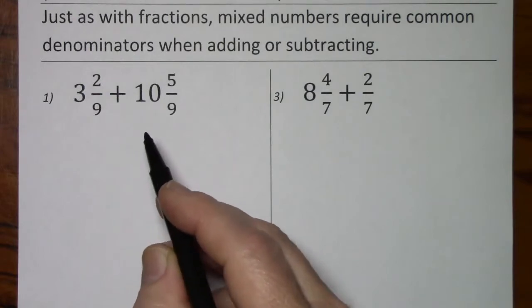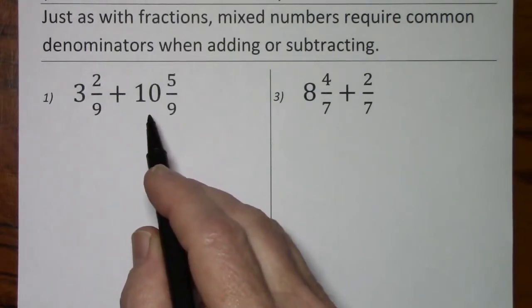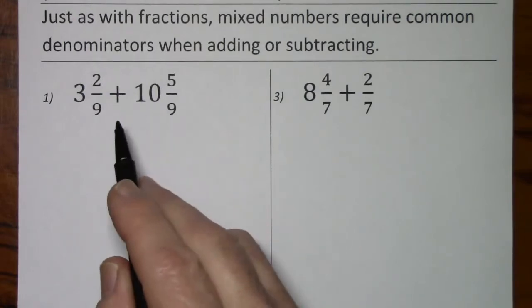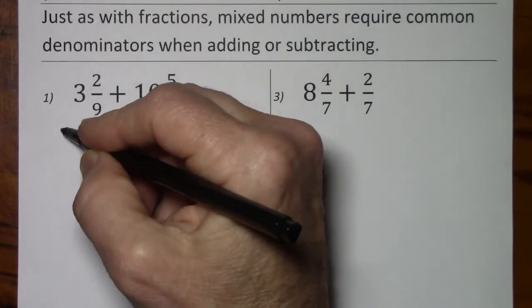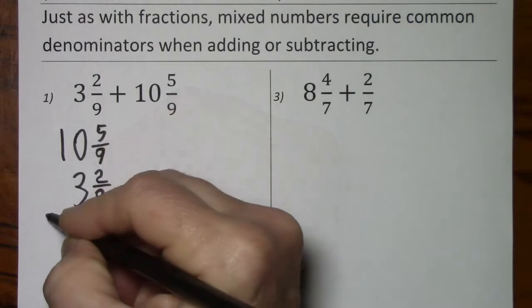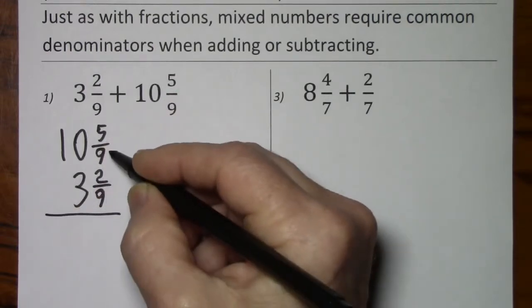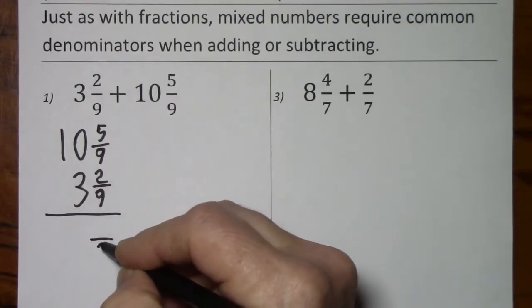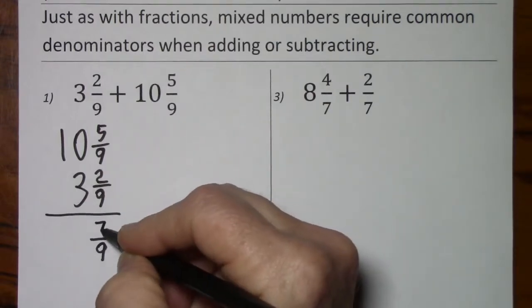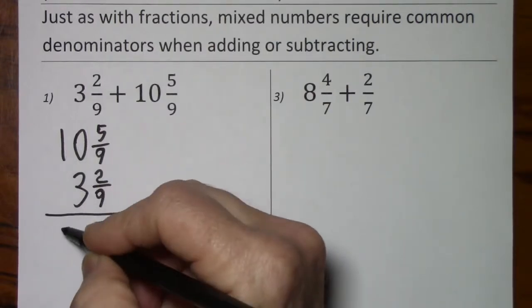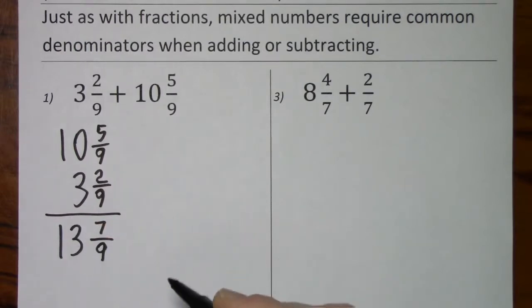We'll go ahead and get started. I usually put the larger number on top. In this case, it doesn't matter because both signs are positive. We will be adding. Since we already have 9s, and then 5 and 2 give us 7. 10 and 3 gives us 13. So there's our answer.